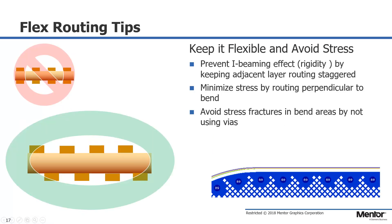Before getting into the tool, I wanted to briefly cover a few concepts. Eye-beaming will cause undesired rigidity in a flexible circuit — eye-beaming is caused when traces on multiple layers are not staggered. Straight, uniform, non-bending, and perpendicular routing in bend areas is advised to minimize unequal stress on the trace structures. This means avoid changes in trace width, routing at odd angles in relation to the bend, and avoiding trace cornering. Vias in flexible bend areas are also prone to stress fractures due to deformation during flexing.